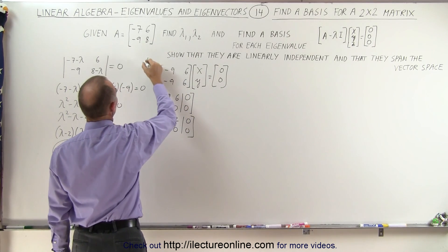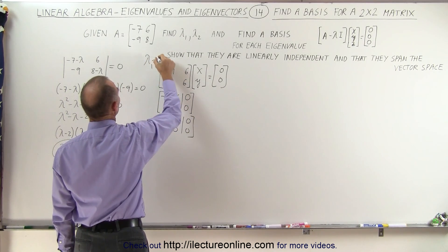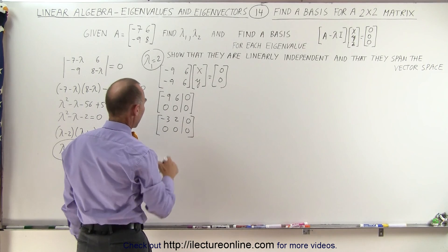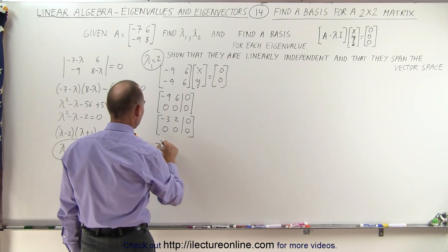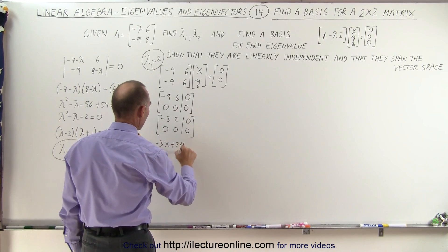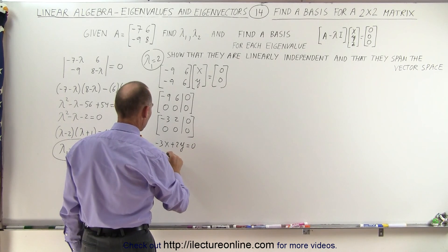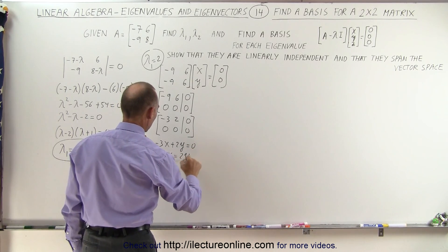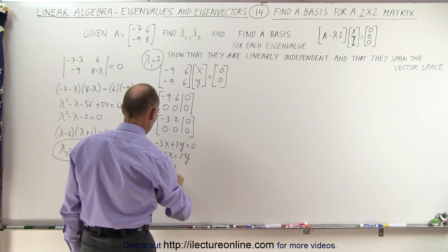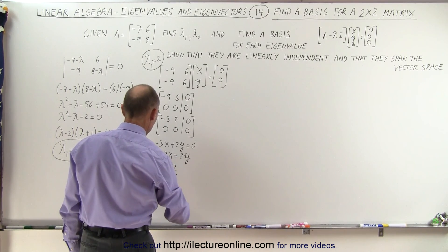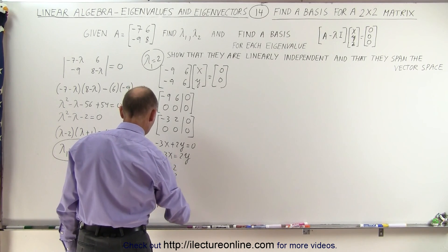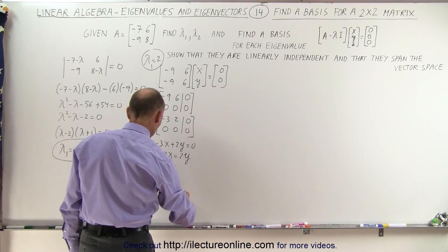Which means to find the eigenvector for this particular eigenvalue, lambda sub 1 equals 2, that means that minus 3x plus 2y equals 0, or 3x equals 2y, which means that x equals 2 and y equals 3, which means that our first vector is equal to 2 and 3.